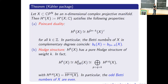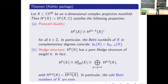There is a Hodge structure on the cohomology in each degree, which is pure of weight given by the index of the cohomology. This is essentially given by the de Rham cohomology, the p,q-type decomposition of forms. As a consequence — again a topological consequence — the odd Betti numbers of such a Kähler manifold are even.